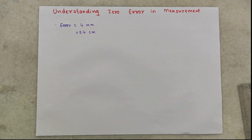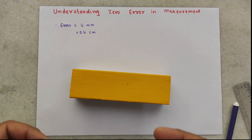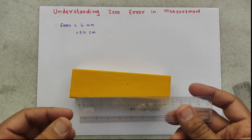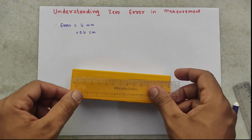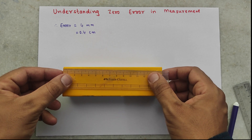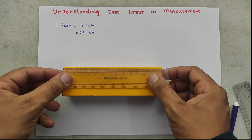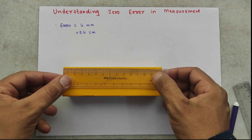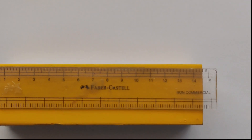Now, let us say we want to measure the length of an object — the duster in our case — using this broken scale. What we need to do is place the object against the scale, aligning one end of the object with the broken part, and take the measurement from the other end.